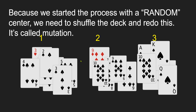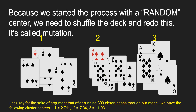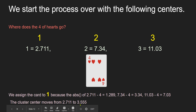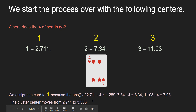This process is called mutation — we're mutating this data set. After doing these 300 cards, we now have cluster centers of 1.27, 7.34, and 11.03. Where does the four of hearts go? We assign it to cluster one because 1.27 minus 4 is 1.289 (the closest), versus 7.34 minus 4 which is 3.34, and 11.03 minus 4 which is 7. So the cluster center then moves from 1.27 to 3.555, creeping a little bit closer to cluster two.